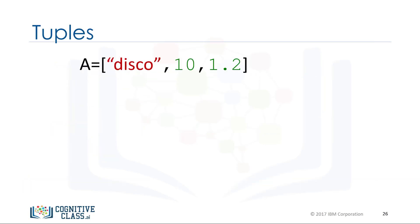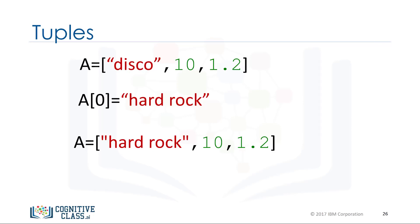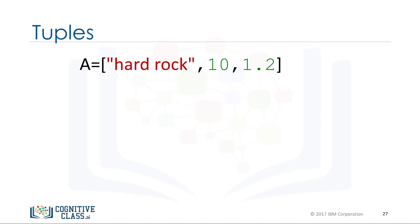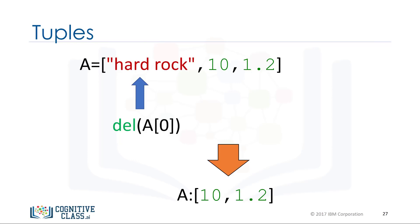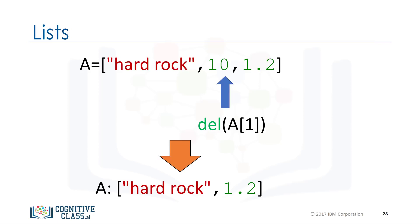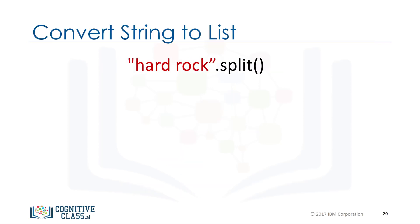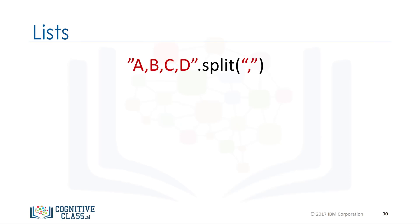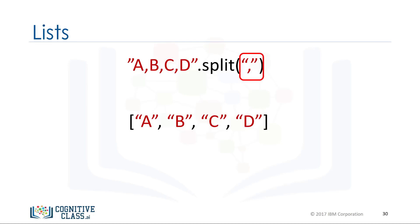As lists are mutable, we can change them — for example, we can change the first element, and the list becomes hard rock, 10, 1.2. We can delete an element of a list using the del command. We can also convert a string to a list using split. The method split converts every group of characters separated by a space into an element of a list. We can also use the split function to separate strings on a specific character known as a delimiter — for example, a comma.